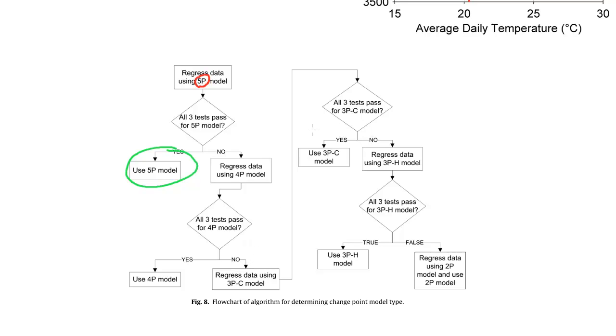And between 3P cooling and 3P heating, it doesn't matter actually what order you have them in because they're kind of dichotomous. If one passes, the other one would be guaranteed to fail. And if the 3P models don't pass, go ahead and as a very last resort, use a standard straight line fit through the data.